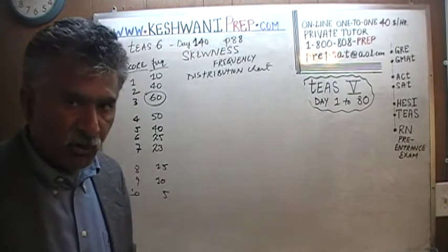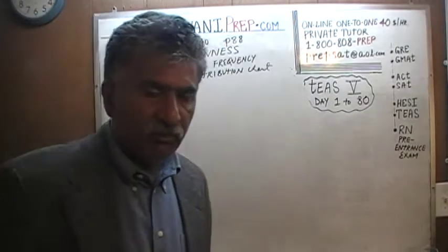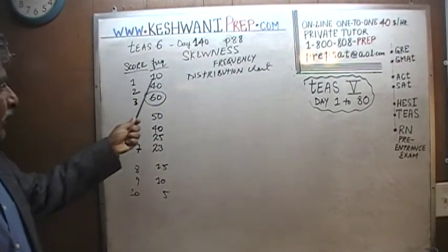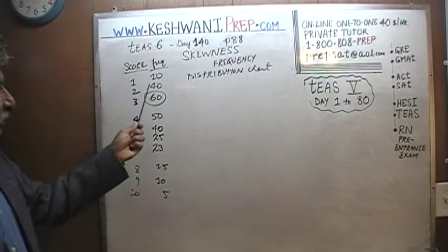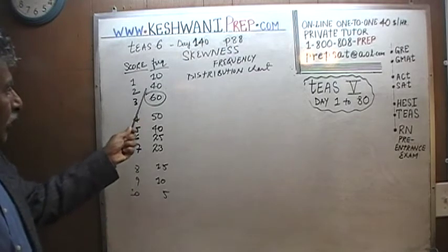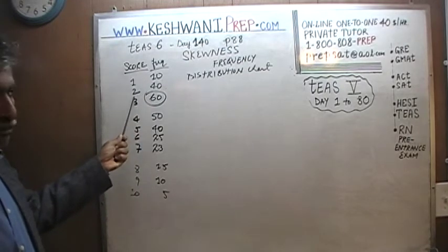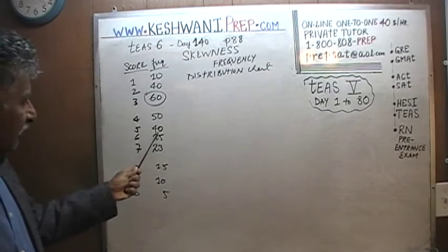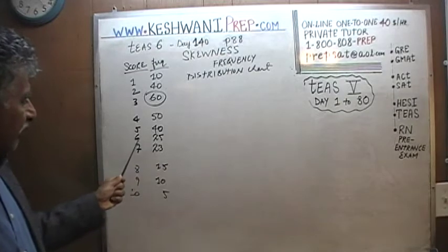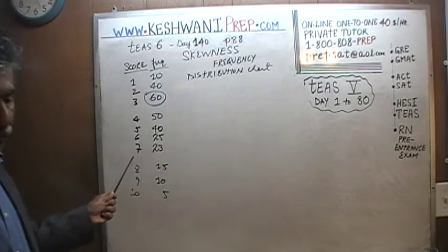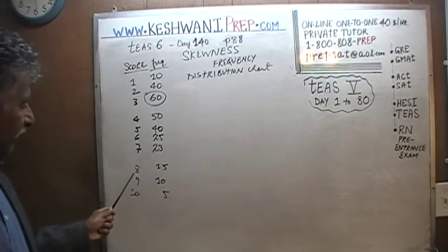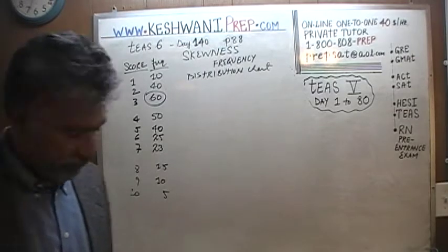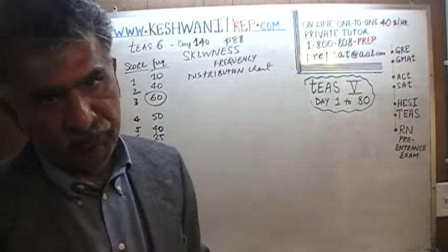An exam was given — a quiz was given — and the quiz had a top score, a maximum score of 10. Nobody got a zero. This is a frequency distribution: 10 people got 1, 40 people got 2, 60 people got 3, 50 people got 4, 40 people got 5, 25 people got 6, 23 people got 7, 15 people got 8, 10 people got 9, and 5 people managed to get a perfect score.